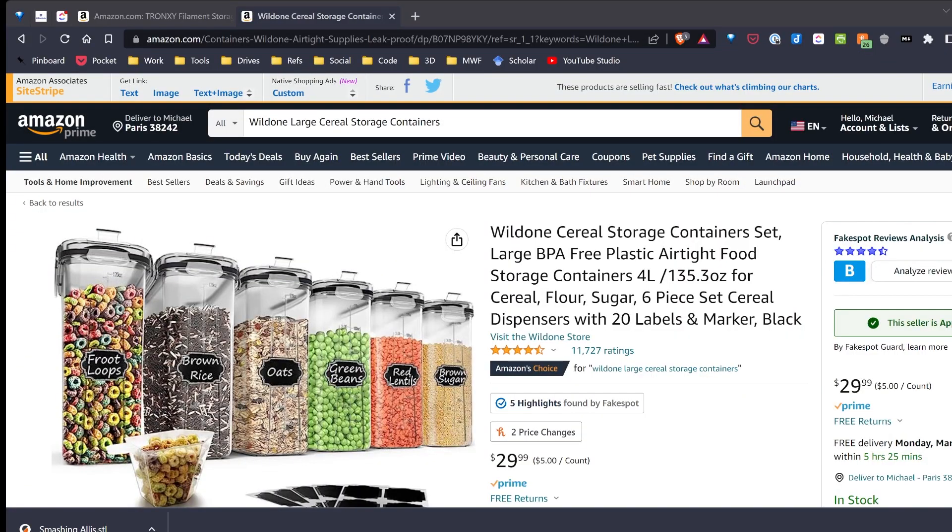So let's go ahead and get started. For my permanent dry boxes, I use these Wild One Cereal Storage Container Sets and some 3D printed parts. If you're interested in making your own, I'll link to a video up top that I've done previously so you can take a look.